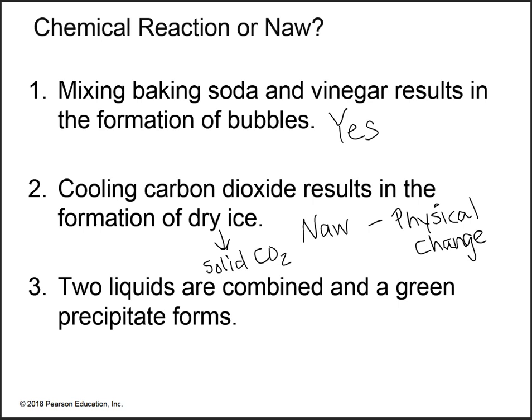For number three, combining two liquids to form a green precipitate — we're forming something new here, so yes, there is absolutely a chemical reaction. You've made something new and it's now solid and green. Be able to go through examples like this and say whether or not a chemical reaction is taking place.